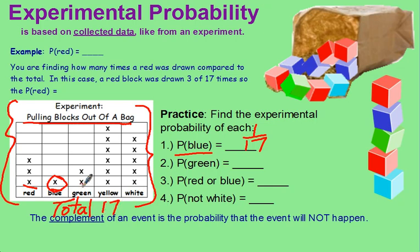Probability of choosing a green would be 2 out of 17. Probability of choosing a red or a blue would be 1, 2, 3, 4 out of 17.